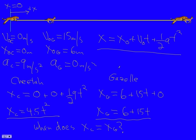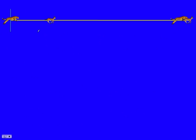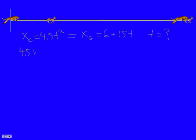Recalling the cheetah's equation, 4.5t squared, and the gazelle's equation, 6 plus 15t, we are setting these two equal to each other and solving for a time. I get 4.5t squared minus 15t minus 6 equals zero. I always like to have, when I'm setting up a quadratic, my a term be positive.